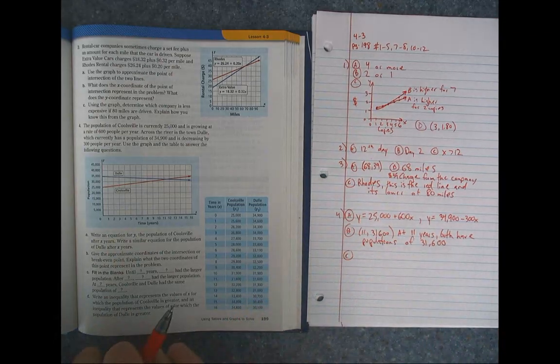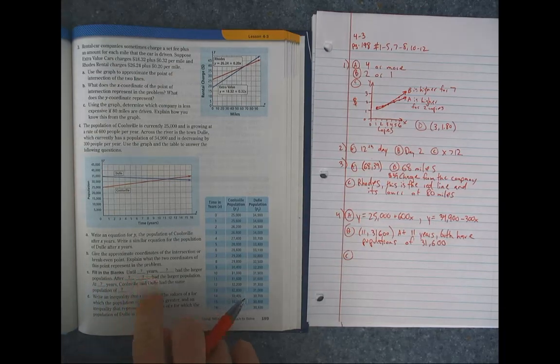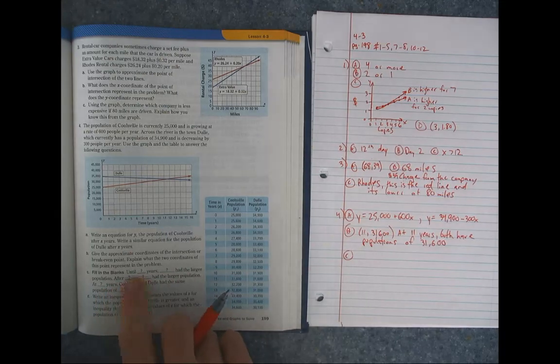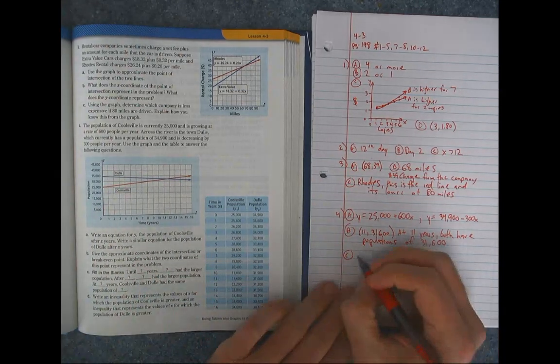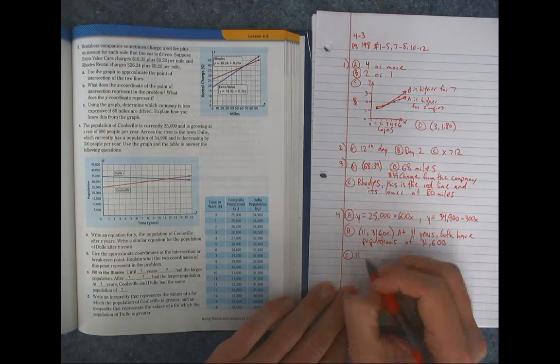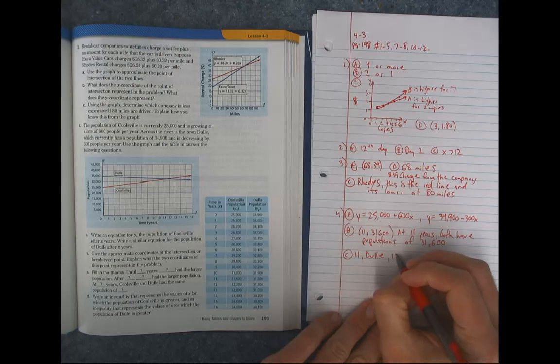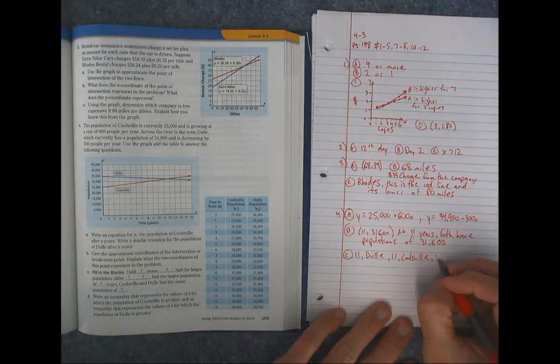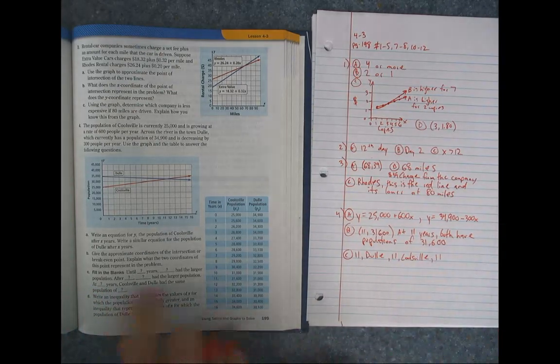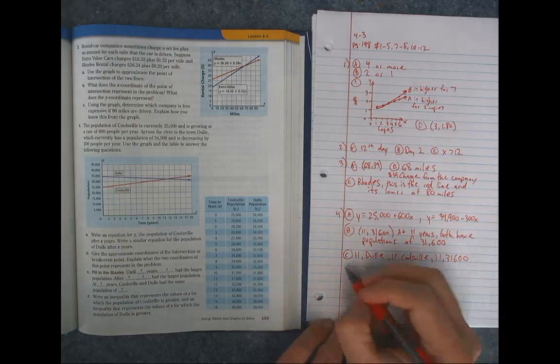Okay, letter C. Fill in the blanks. Until blank years, blank had a larger population. So Dull had the larger population until year 11. So the first blank is until 11 years. Dull had the larger population. After 11 years, Coolsville had the larger population. And then at blank years, so again at 11 years, Coolsville and Dull had the same population of 31,600. So we're kind of given a lot of the same information we already gave in the earlier question. So a little redundant, a little repetitive there.